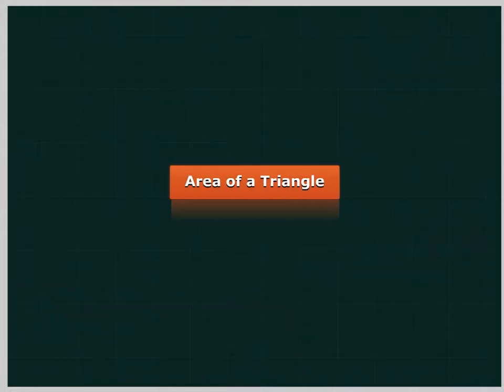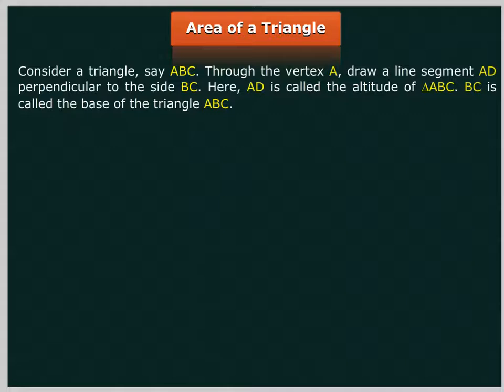Area of a triangle. Consider a triangle, say ABC. Through the vertex A, draw a line segment AD perpendicular to the side BC. Here, AD is called the altitude of triangle ABC. BC is called the base of the triangle ABC.